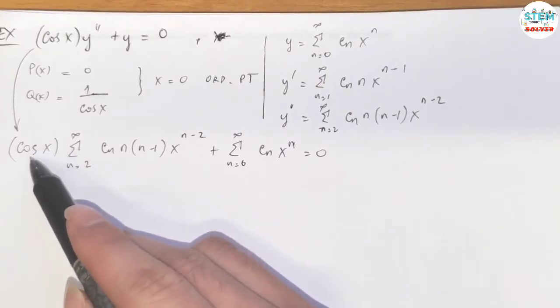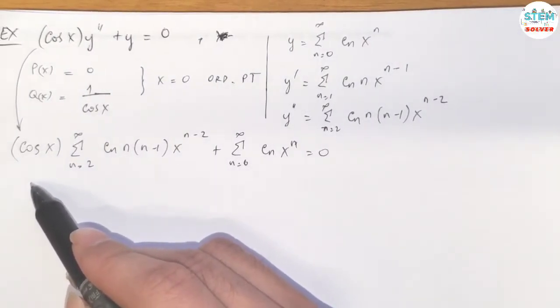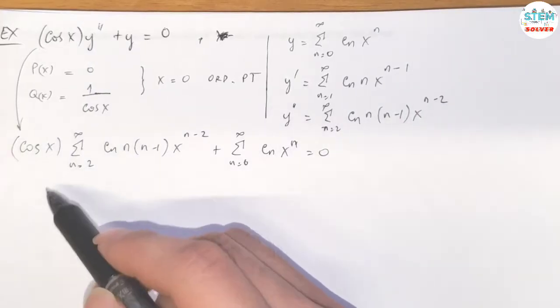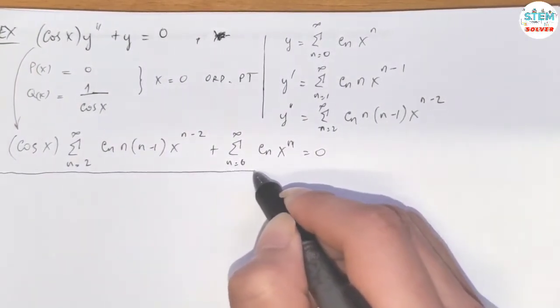For this one, you have to write this as a series and then multiply them manually. Distribute every single term. Let me draw a line to separate the steps here. So this is a tricky problem.